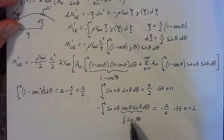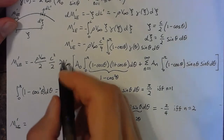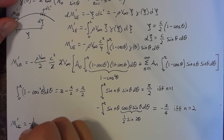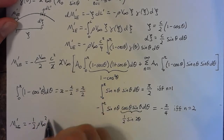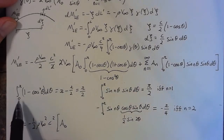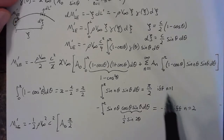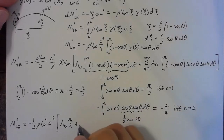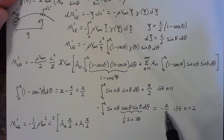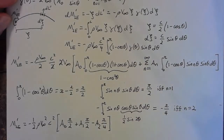Now that we have each of these components, we sum them all together to arrive at the total moment. The moment about the leading edge per unit span is equal to — canceling the two factors of 2 — negative (1/2) ρ V∞² times c². We then have an A₀ term multiplied by π/2, plus an A₁ term multiplied by π/2 for n = 1, plus an A₂ term multiplied by π/4 for n = 2. That is our moment about the leading edge.